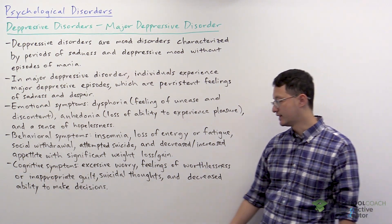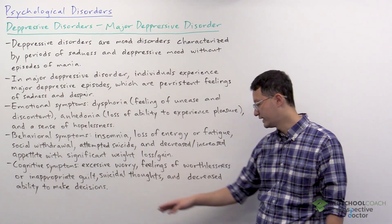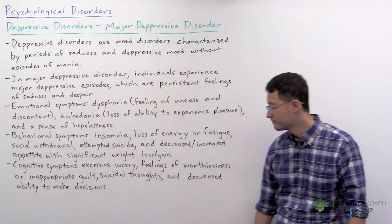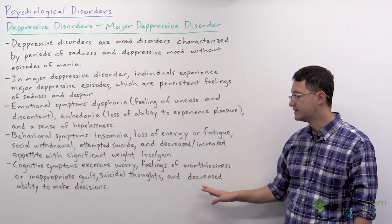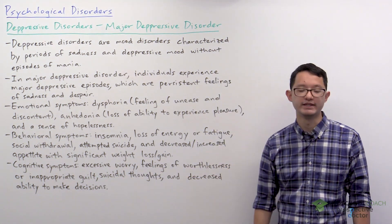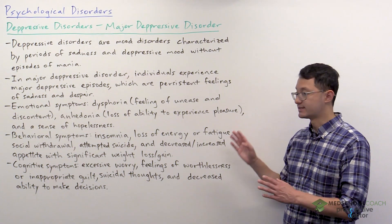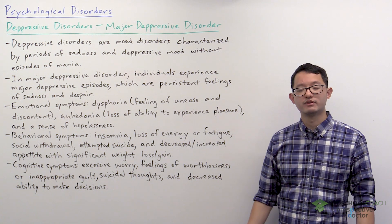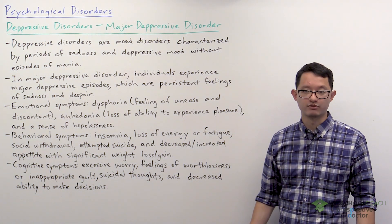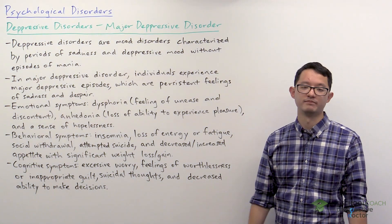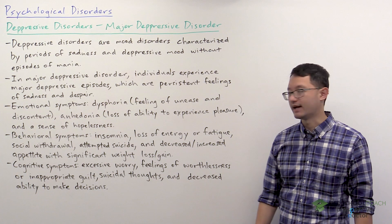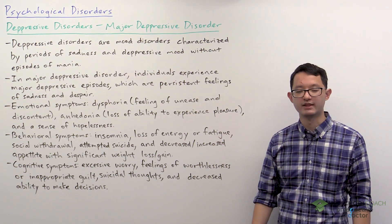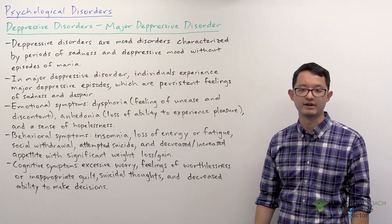Cognitive symptoms include excessive worry, feelings of worthlessness or inappropriate guilt, suicidal thoughts, and decreased ability to make decisions. There are quite a lot of different symptoms, and an individual with major depressive disorder doesn't have to have all of them. However, for the MCAT, you do have to be able to associate these symptoms with major depressive disorder.